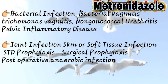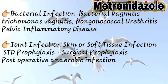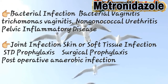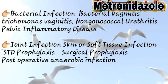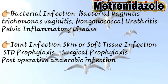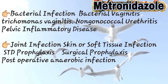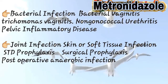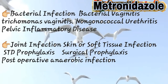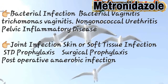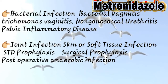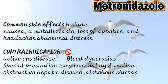Metronidazole can also be prescribed for bacterial infections such as bacterial vaginitis, trichomonas vaginitis, non-gonococcal urethritis, and pelvic inflammatory disease. The suffix '-itis' refers to infection or inflammation — for example, vaginitis is inflammation of the vagina, and urethritis is inflammation of the urethra. It can also be used for joint infections, skin or soft tissue infections, sexually transmitted diseases, prophylactic use in surgical cases, and post-operative anaerobic infections.